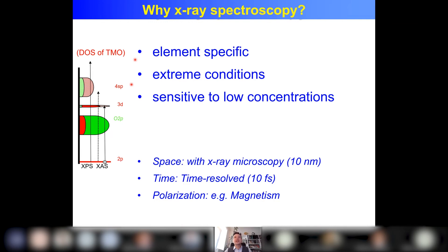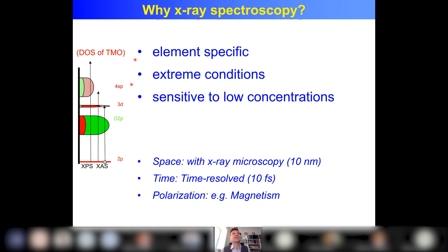Both x-ray absorption and photoemission are element specific. Another nice advantage is that because you use x-rays you can go to extreme conditions — how extreme depends on the energy. If you use hard x-rays you can go to extremely high pressures and extremely high temperatures. Another advantage is sensitivity to low concentration. You can measure spectra of 0.1 ppb concentration with the new beamlines, getting electronic structure information at that level.